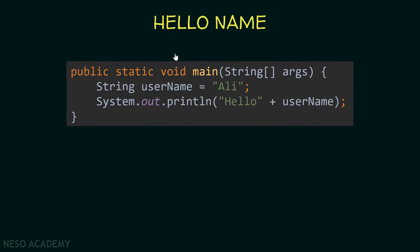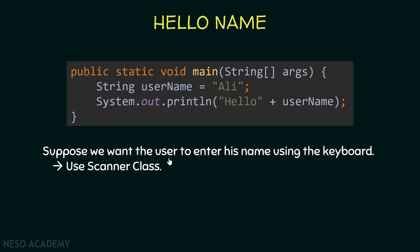Suppose that we have a program that prints hello to the username. For example, I have a string called username and it is assigned a value, and I'm using the println method to say hello to the username. We are storing a value inside the variable username. Suppose that we want the user to enter his name using the keyboard and then print hello username — this is where we will use the Scanner class.